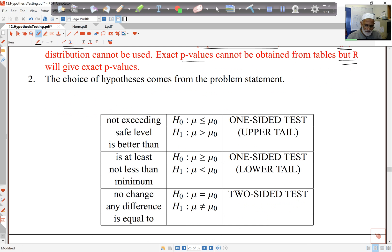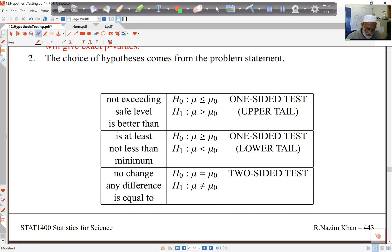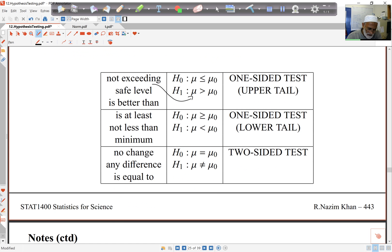The choice of hypothesis comes from the problem at hand. So if I'm saying something like not exceeding or safe level or is better than, I'm going for a one-sided that is better than, higher. If I'm saying at least not less than, then of course I'm looking at less than as my alternative. And if I'm looking at no change, this is going to be equals versus not equals. So again, one-sided if possible. If I want not exceeding, that means my H₀ will be equals and my H₁ will be bigger than. At least, not less than. That means my H₁ will tell me that's what I'm aiming for, less than, not more than this.